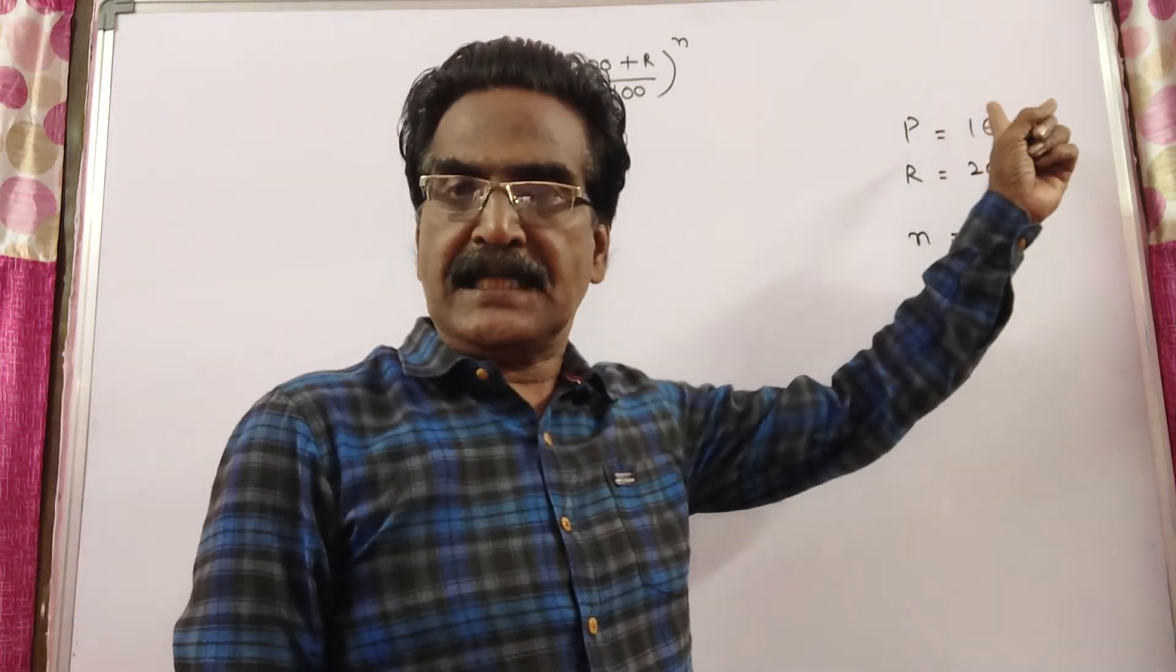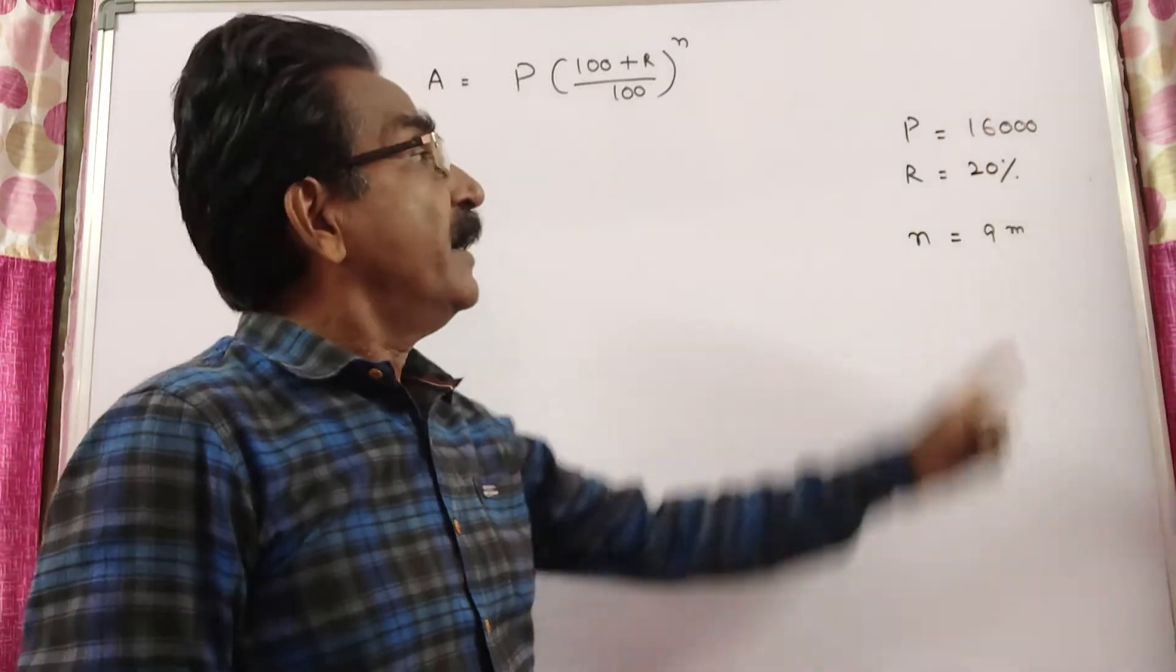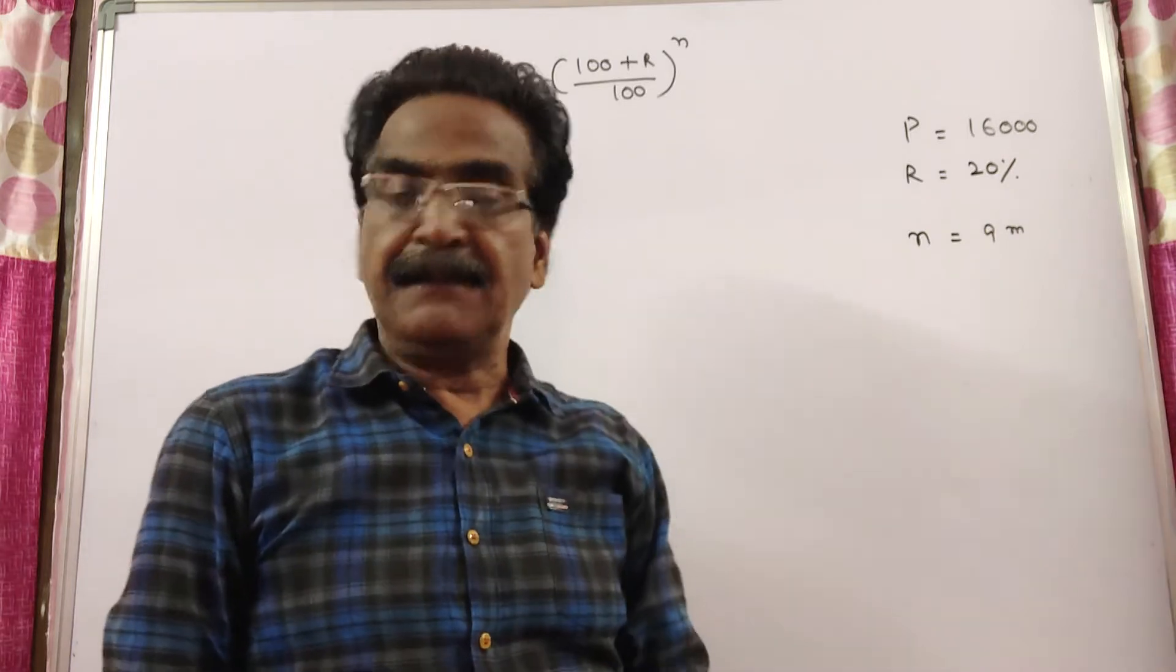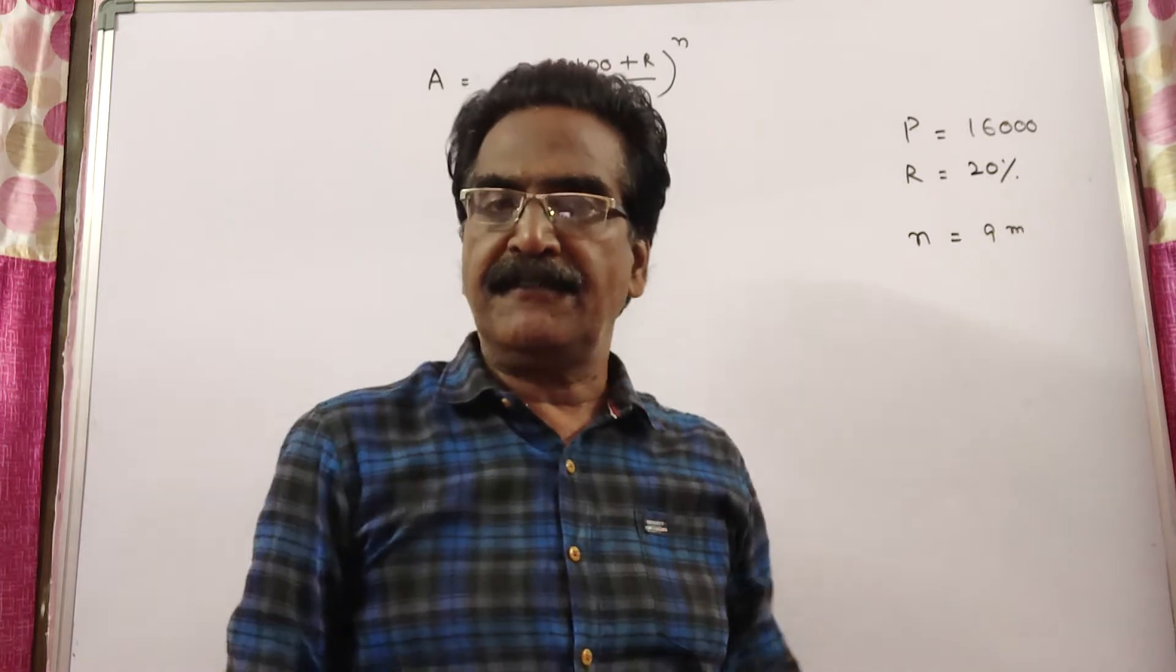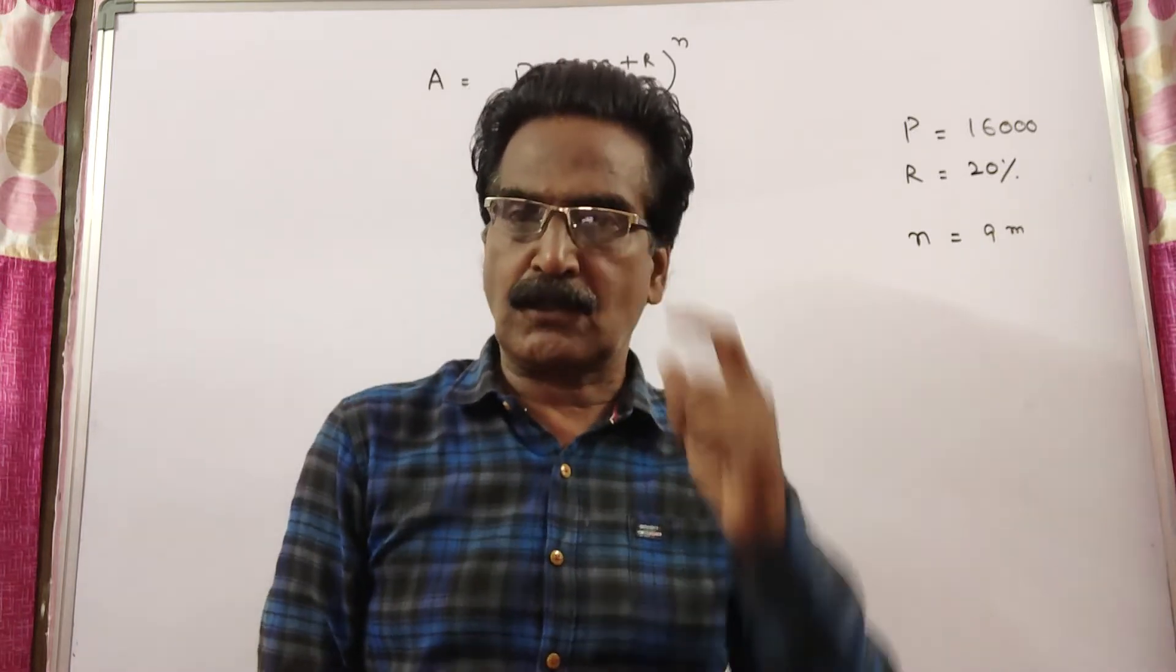Find the compound interest on Rs.16,000 at 20% per annum for 9 months, given that it is quarterly compounded. Friends, the problem is given in the description box also.